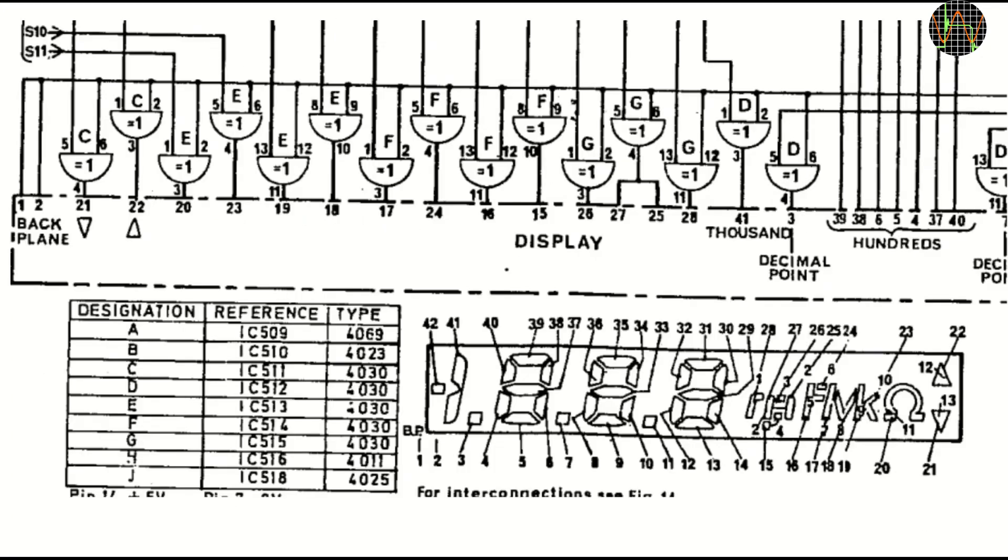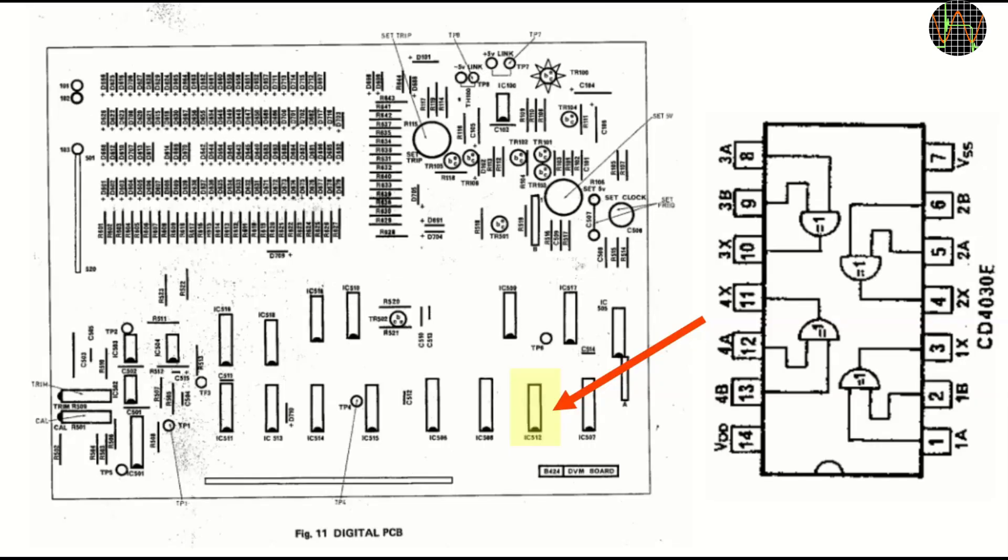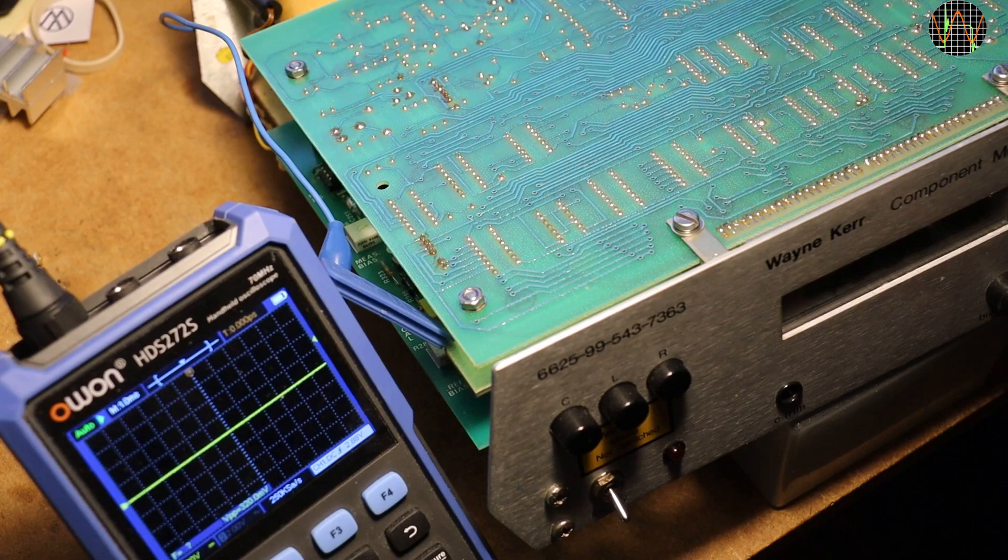A closer look at the part connecting to the display. The leading 1 of the LCD is tagged with the number 41. On the drivers above, the number 41, helpfully labeled 1000, is the output of pin 3 of an XOR gate marked with the label D. The little table on the left shows that D is IC512 and of a type 4030 which has 4 of these gates. I marked the location of the IC512 on the digital board and the pinout of the CD4030E.